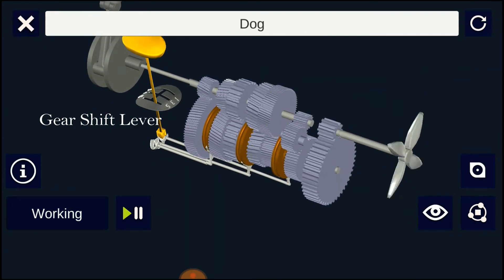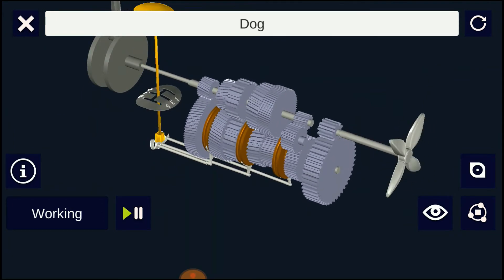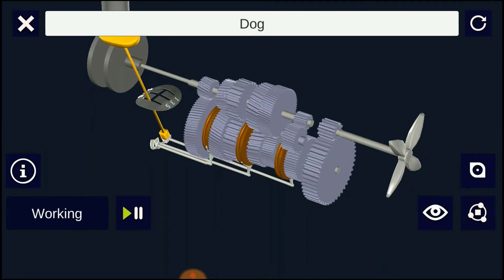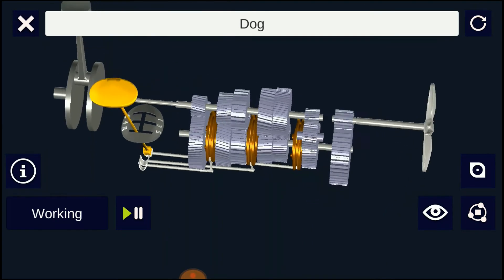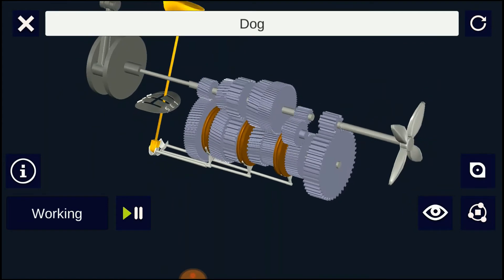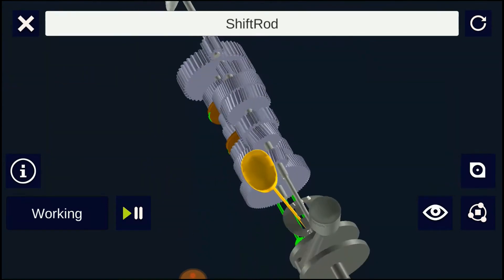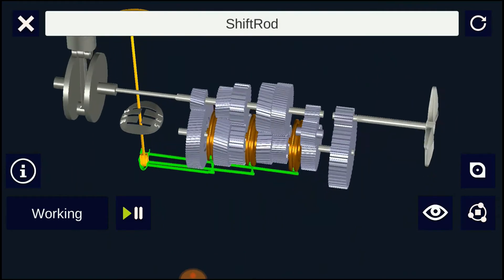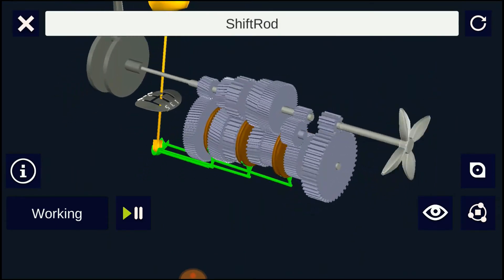In a gearbox, the gear teeth and other moving metal must not touch. They must be continuously separated by a thin film of lubricant. This prevents excessive wear and early failure. Therefore, a gearbox runs partially filled with lubricant oil.